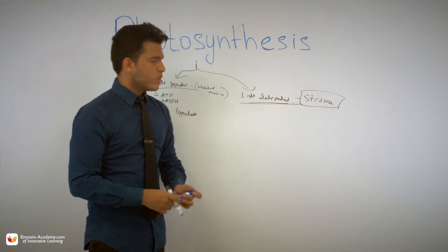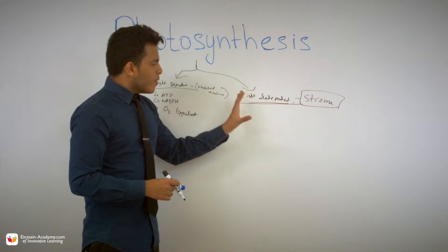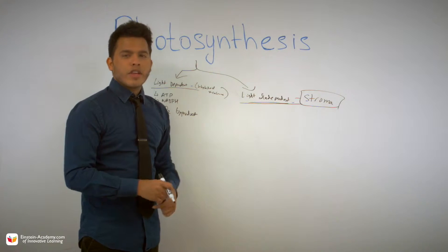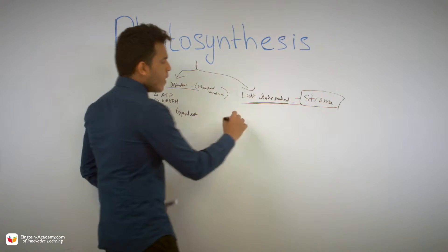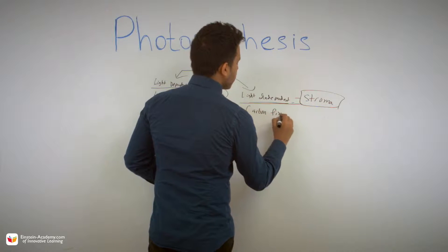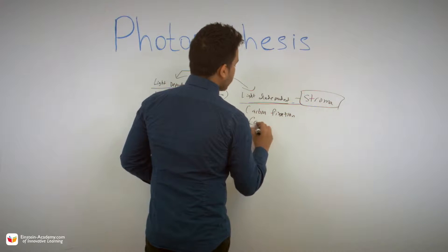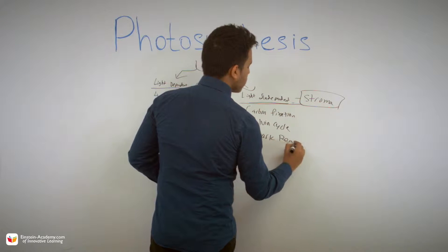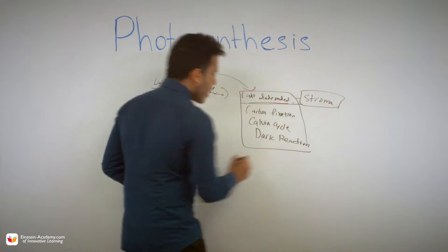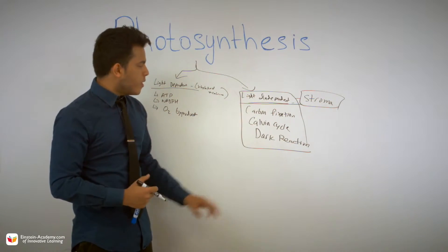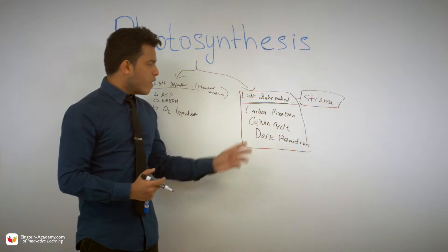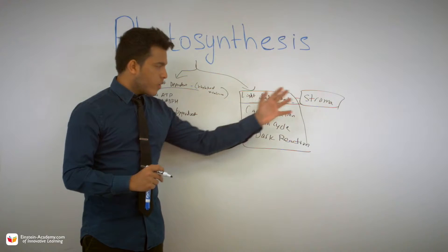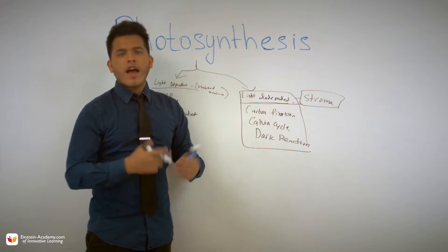Memorize the location — it's crucial, and a simple multiple choice question will come from this. Something special about the light-independent reaction: it can be written many other ways. You might see carbon fixation, the Calvin cycle, or the dark reaction. These all refer to the same thing. Don't get confused on the AP exam — they all mean the same thing, and it occurs in the stroma.